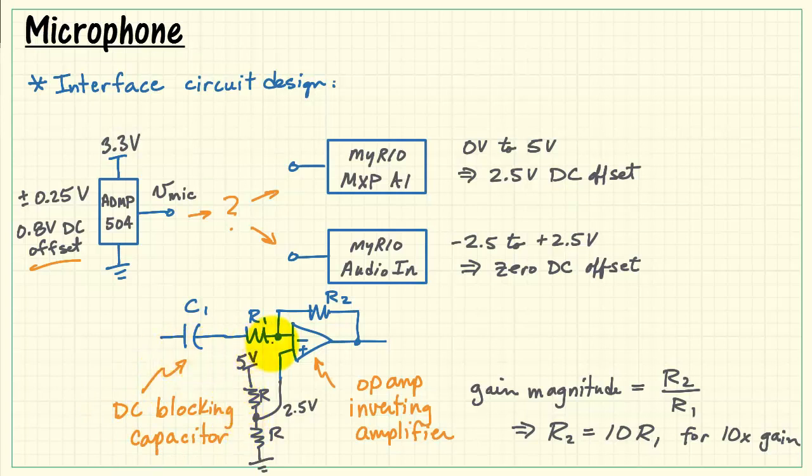Here, the DC blocking capacitor and resistor R1 establish a low-cut frequency of 1 over 2π times R1 C1. We need this value to be less than 100 hertz.